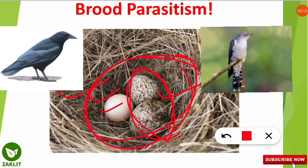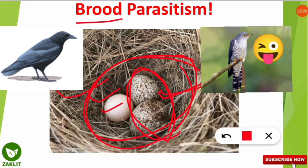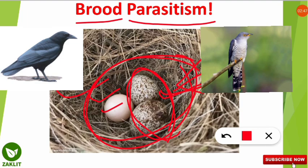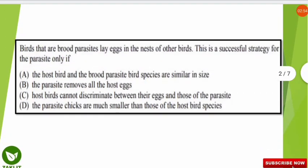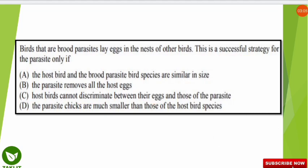The crow takes care of all the eggs thinking they all belong to it, but they actually belong to both the crow and the cuckoo. When the eggs mature and hatch, the young birds live their independent lives. In this way, the cuckoo wastes no energy, while the crow shares its energy and food caring for another bird's egg. This is brood parasitism — the parasite lays the egg and the host unknowingly cares for it.